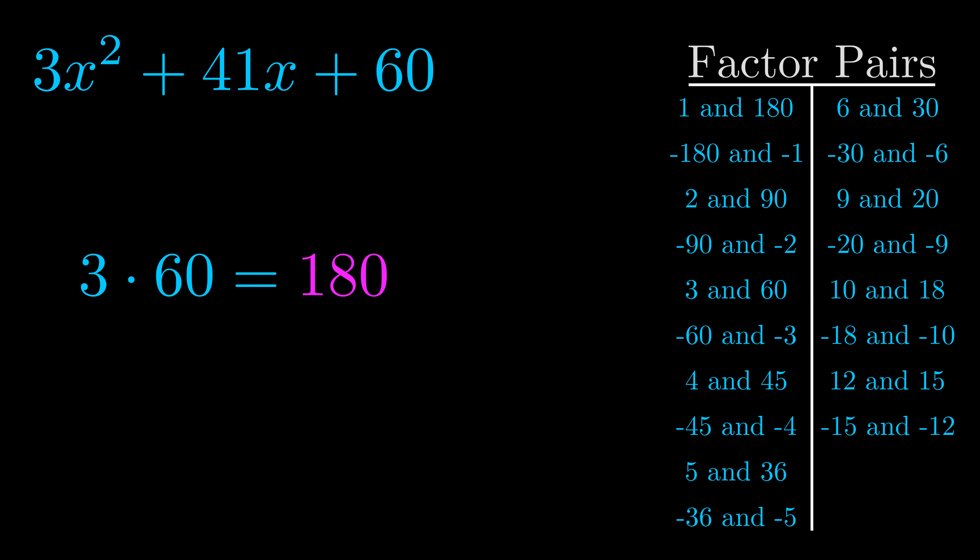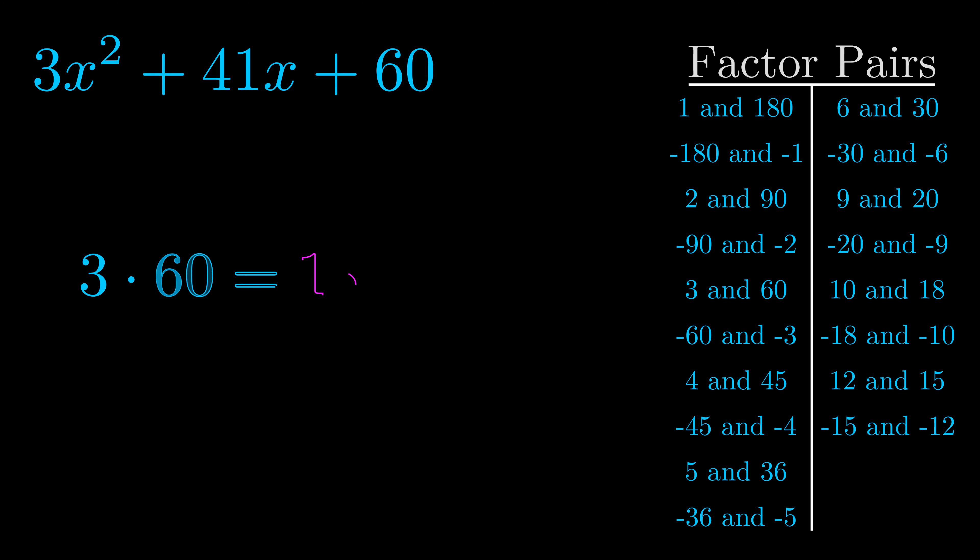Now once you have these factor pairs, the goal is to find which of these pairs adds to the b value. The b value is the coefficient on the x term, that's the middle term, the one that we haven't done anything with yet. And really this is the only factor pair that we need.